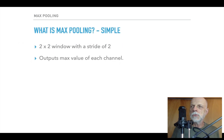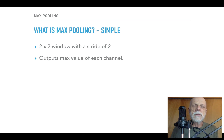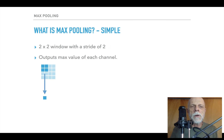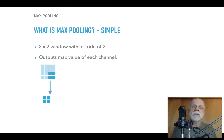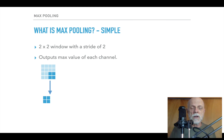Max pooling is super simple — we just output the max value of each channel. We look at a 2 by 2 part of that layer, find the max, and output that. Then we slide over with a stride of two, look at the next part, output the max, stride over, and output again. It's a very simple operation — just find the max of a 2 by 2 window with a stride of two.